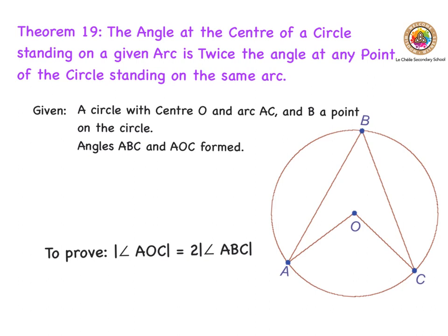In order to do that, we write down: given a circle with center O and an arc from A to C, and somewhere on the other part of the circle is point B, forming angle ABC and angle AOC. We want to prove that angle AOC is two times the size of angle ABC.